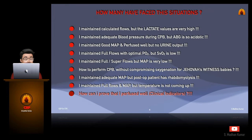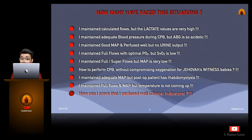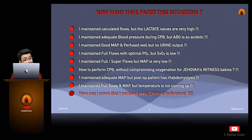But how many of us have faced these situations? I maintained calculated flows, but the lactate values are very high. I maintained the adequate blood pressure during CPB, but ABG is so acidic. I maintained good mean arterial pressure and perfused well, but there is no urine output. I maintained full flows with optimal PO2, but SVO2 is low.